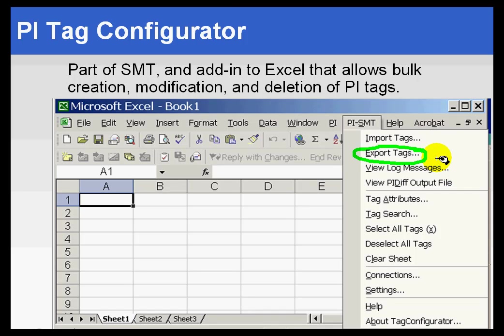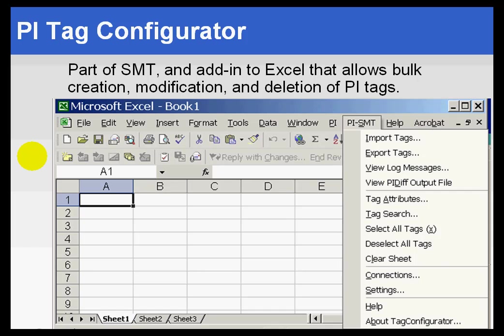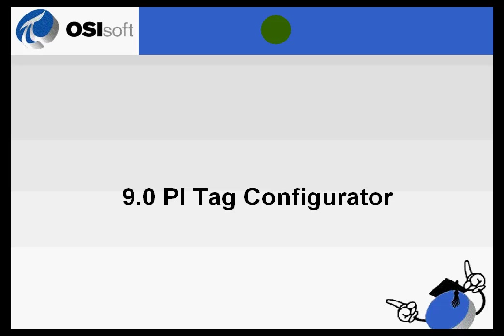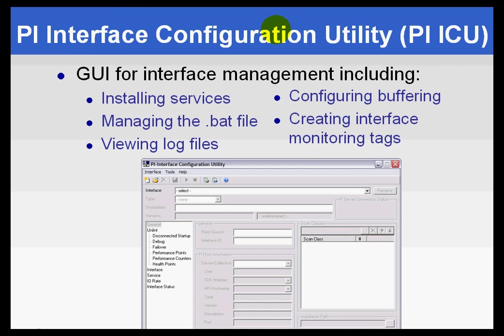One of the typical things we see people do: if you have 10,000 tags to create, you can export from the control system, bring that into a spreadsheet, make minor modifications like changing descriptor names, and then export back out to the PI Server to build your point database that way. It's a great utility for managing the PI System in bulk. We are going to spend a great deal of time on this later in the Tag Configurator section around page 386.